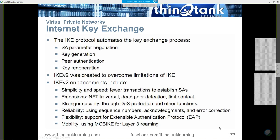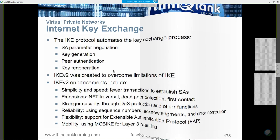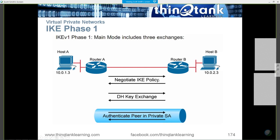Phase one is the key exchange process. First, we negotiate our policy: what type of encryption are we going to use? How long are the keys going to be valid? What is our authentication mechanism — are we using RSA or a pre-shared key? All of the parameters of the security association are being negotiated here.